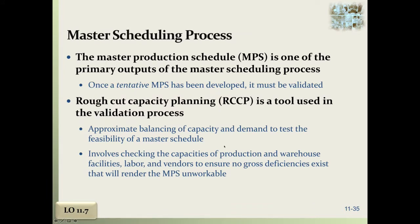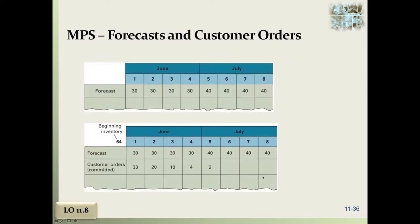The master production schedule is one of the primary outputs of the master scheduling process. Once a tentative MPS has been developed, it has to be validated through rough cut capacity planning. It's really looking at balancing capacity and demand to test the feasibility of the master schedule. This involves checking the capacities of production facilities, labor, vendors, all of those things, and making sure that there's no big issues.